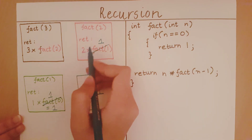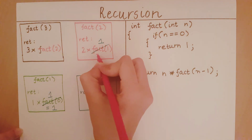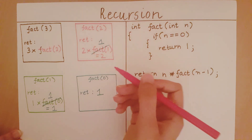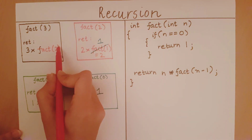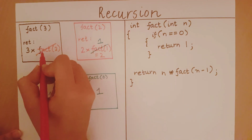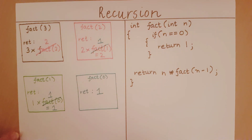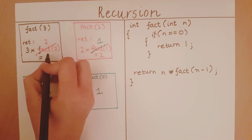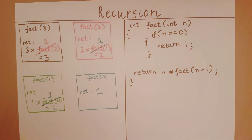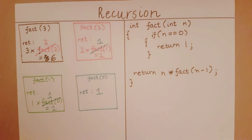So now factorial of 2 will return its value to the point at which it was called, replacing its call with its return value. So now factorial of 3 is equal to 3 into 2, which is equal to 6 — I'm sorry, this is 6, not 3. Factorial of 3 will return its return value to the point at which it was called. Since the user called factorial of 3, it returns 6 back to the user, which is exactly what we want. This is how a recursive function works and how you can see the dynamics of generating the output.